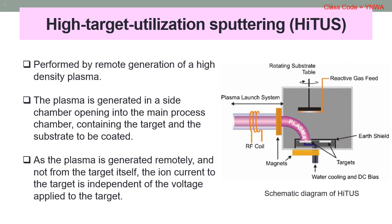High target utilization sputtering, or HiTUS: sputtering may also be performed by remote generation of a high density plasma. The plasma is generated in a side chamber opening into the main process chamber, containing the target and the substrate to be coated. As the plasma is generated remotely, and not from the target itself as in conventional magnetron sputtering, the ion current to the target is independent of the voltage applied to the target.